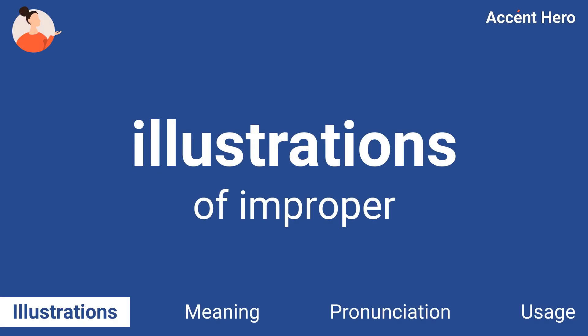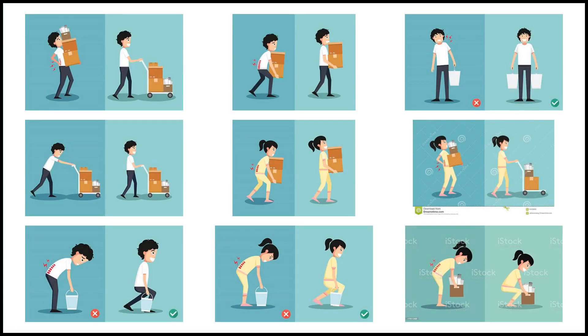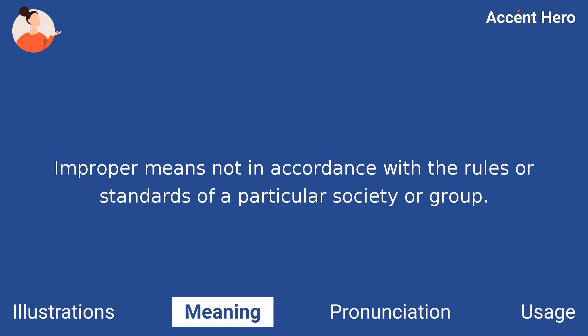Illustrations. Meaning. Improper means not in accordance with the rules or standards of a particular society or group.